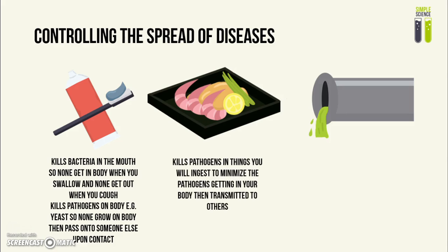You also have to kill the pathogens in everything you're going to eat. So you have to prepare your food in a hygienic way and store your food hygienically — for example, storing cooked food and raw food in separate containers. This minimizes the amount of pathogens you take into your body when eating, which in turn minimizes the chances of you passing pathogens on to another person via body fluids.